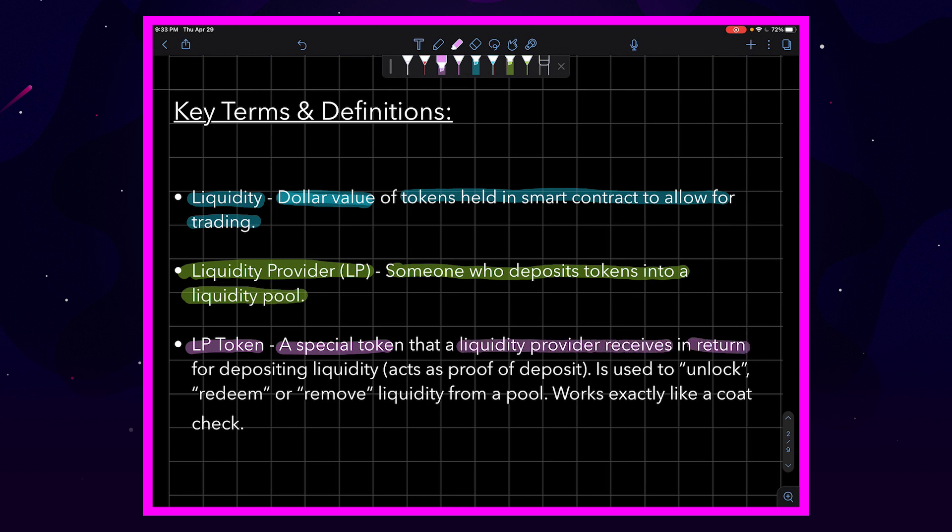Okay, it acts as a proof of deposit and can be used to unlock, redeem, or remove liquidity from a pool. It works exactly like a coat check. If anyone's ever been to a wedding, you drop off your coat with the guys at the front and they give you a little ticket, and at the end of the night you give them the ticket back and get your coat back. It's exactly how a liquidity provider token works.